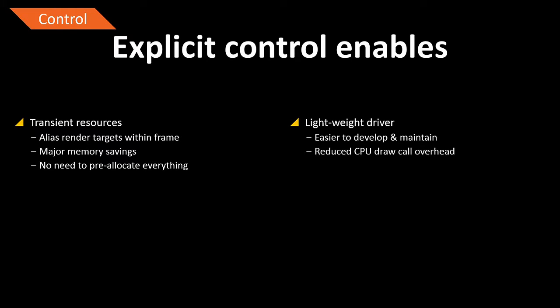Explicit control enables transient resources. In the traditional model, render targets are complex resources requiring upfront allocation that consume a lot of memory, especially in modern rendering pipelines. With explicit memory management, we can alias these render targets and save a lot of memory — we don't have to pre-allocate everything. Moving responsibility from the driver to the application also means the actual driver can become significantly easier to develop, maintain, and of course reduce CPU overhead.